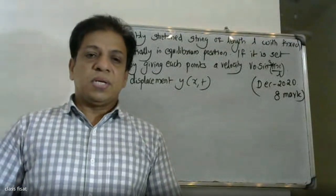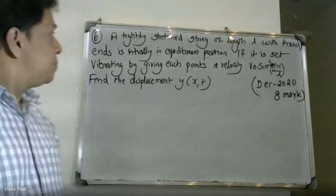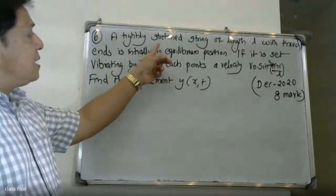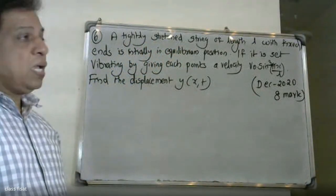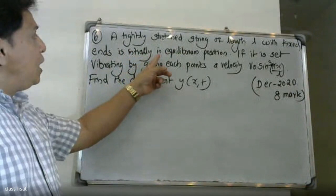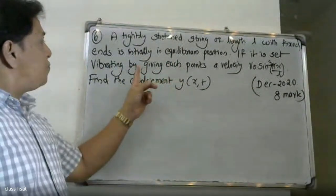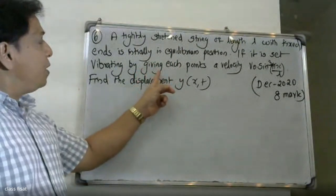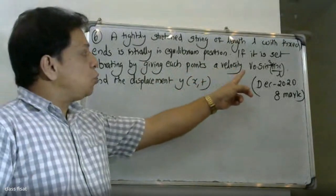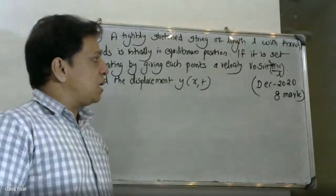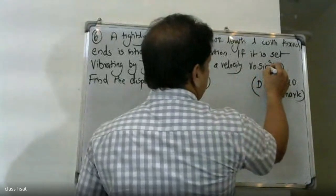Good morning students. The problem is: a tightly stretched string of length L with fixed ends is initially in the equilibrium position. It is set vibrating by giving each point a velocity v₀ sin³(πx/a).